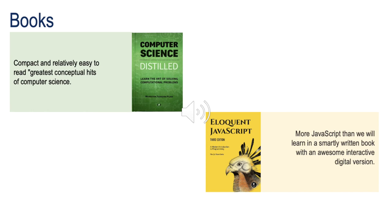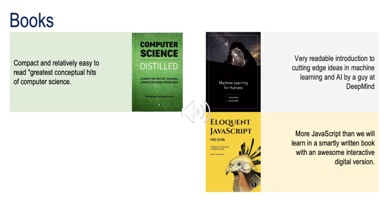The nice thing about Eloquent JavaScript is the full text is available in a digital version online for free, though you can make a donation if you find it valuable. That online version contains inline code examples where you can try out the code right in the middle of reading the book — it's fully interactive, really a marvelous resource. The third book is Machine Learning for Humans, which you can read online as a series of blog posts or download as a PDF, both free. It's a very readable introduction to the big ideas in machine learning and AI — incredibly accessible but doesn't water stuff down, and will position us nicely to do some hands-on exercises with TensorFlow.